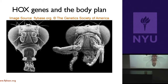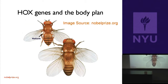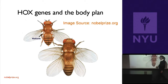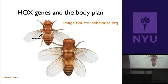Here's another mutation Ed Lewis studied. A normal fly has one pair of wings in the second thoracic segment. One of the mutations he studied is called bithorax, where you get two pairs of wings. Again, this is a type of mutation where an entire part of the body is changed by a mutation in presumably a single gene. I want to tell you a little more about fly anatomy so we can understand this more deeply.